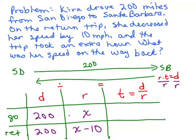So her time going is distance over rate, 200 divided by x. And on the return trip, the distance over the rate would be 200 over x minus 10. So that's how we're going to start.